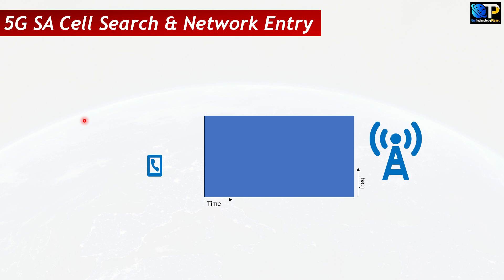The first thing a UE needs to search for is the SSB — the synchronization signal block — which is required by the UE to synchronize in the downlink. In NSA, the LTE anchor tells the UE where the SSB is and the UE just goes there. But in standalone there is no LTE anchor, so the UE has to find the SSB by itself.